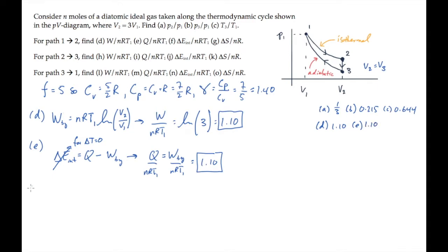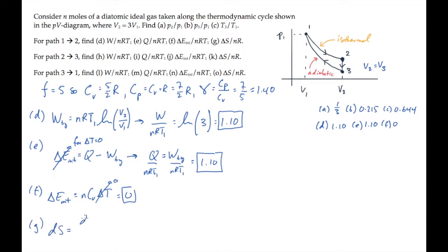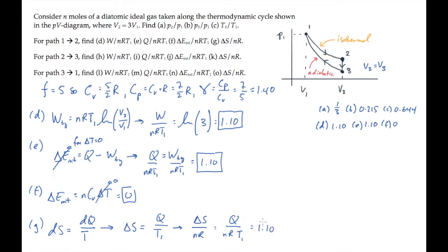Part F asks for the change in internal energy. For an isothermal process, delta T is 0, so there's no change in internal energy, and the answer is 0. Part G asks for the entropy change divided by nR. We'll find that by integrating dQ over T. The left-hand side gives us delta S, and on the right-hand side the temperature is constant, so we get Q over T1. When we divide both sides by nR, we end up with Q divided by nRT1, and again that's 1.10.